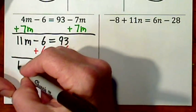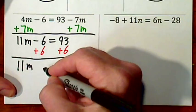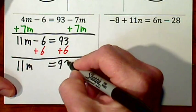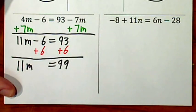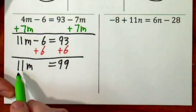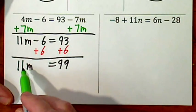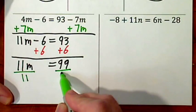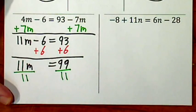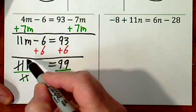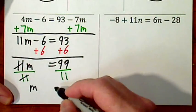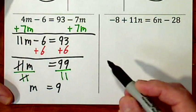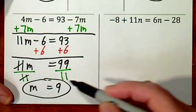This leaves us with 11m. That's a 0. Signs are the same. We add. Now I want to get rid of the 11. It's held by multiplication. So divide by 11. Divide by 11. If 11 goes into 11 once, we have m. 99 divided by 11 is simply 9. So that's our solution.